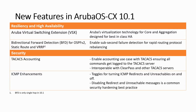Now let's dive into the new features available in the 10.1 release. The most important new feature is the virtual switching extension, which I will cover later in this video. For resiliency and availability, release 10.1 now supports bi-directional forward detection for OSPF V2, static route and VRRP. And for security, release 10.1 now supports TACACS accounting.